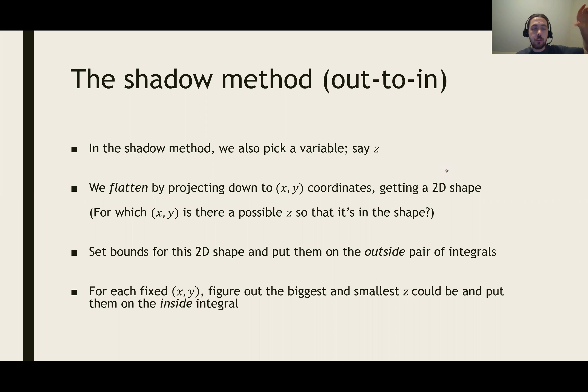When we do that, we can think of it as shining a light over top, and that gives us a shadow inside the xy plane, and figure out what points does it lie over top of. Then we set up the boundary bounds for this 2D shape, and we put them on the outside pair of integrals. And then for each fixed value of x and y that are inside this shape, we've got to figure out what are the biggest and smallest that z could be. And we put those on the inside integral.